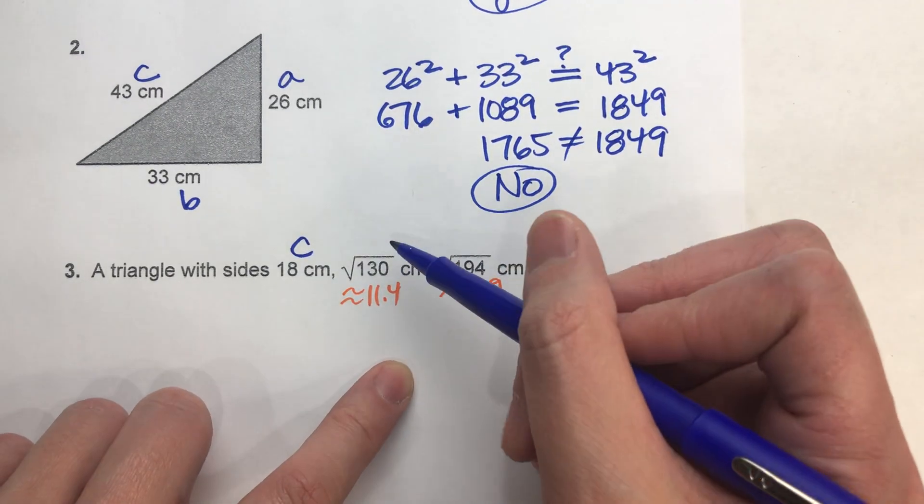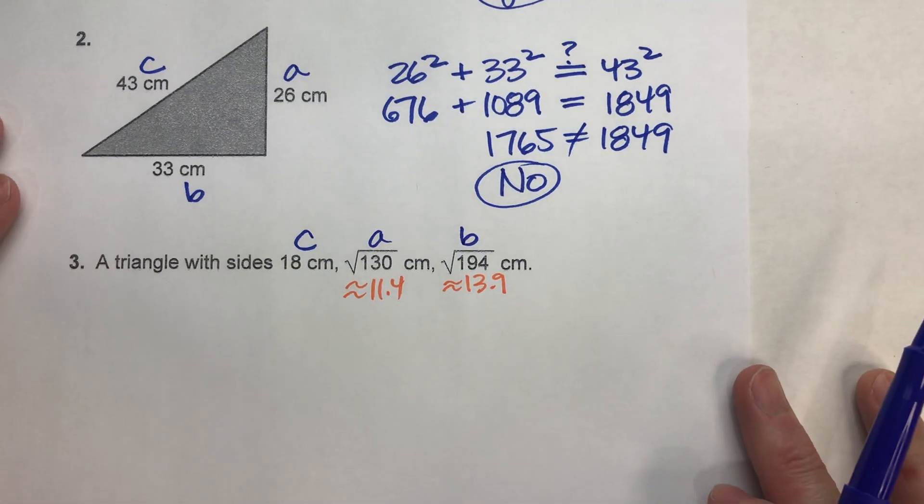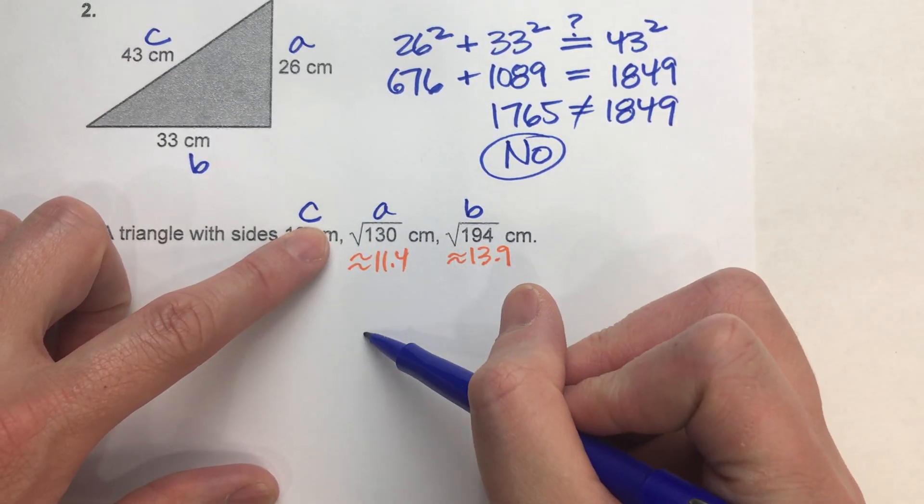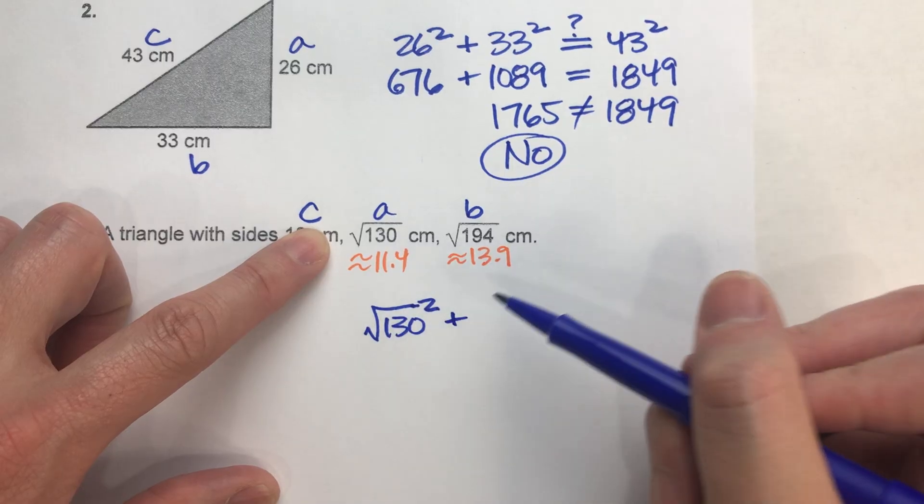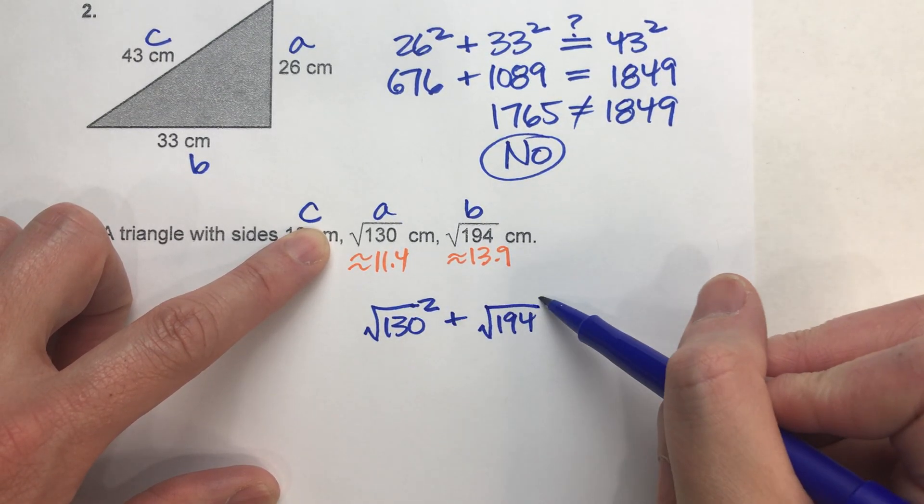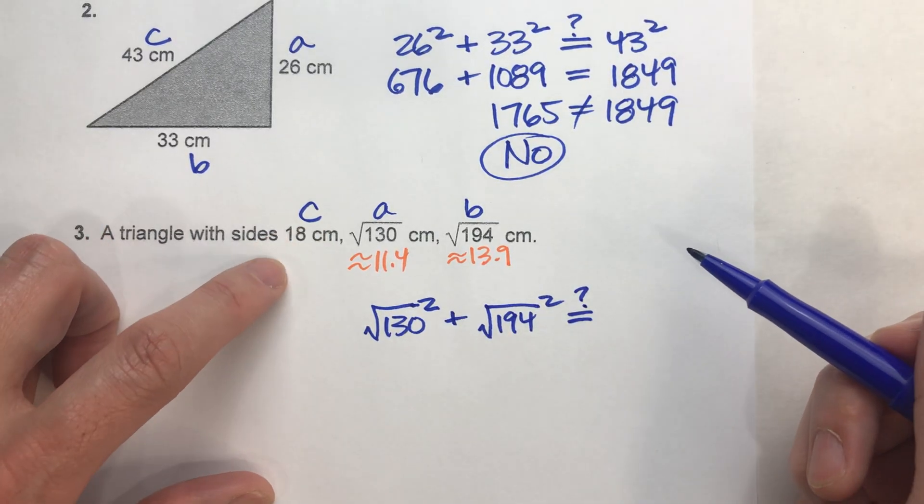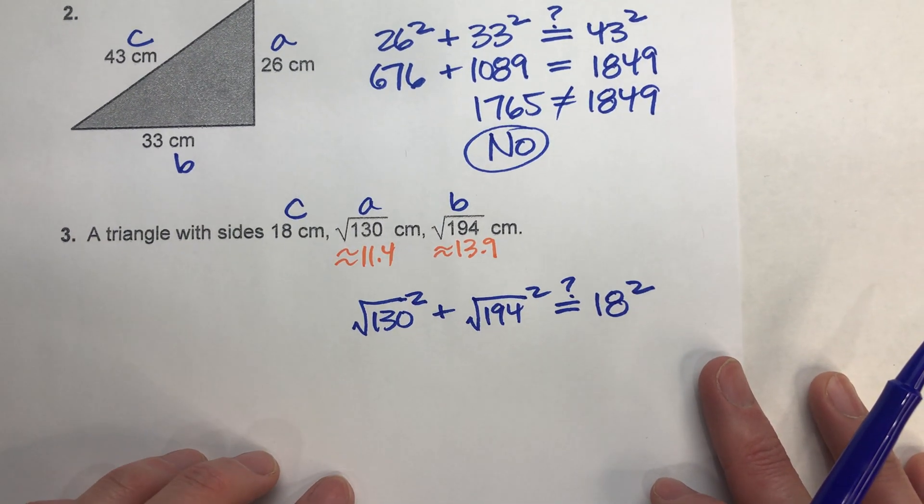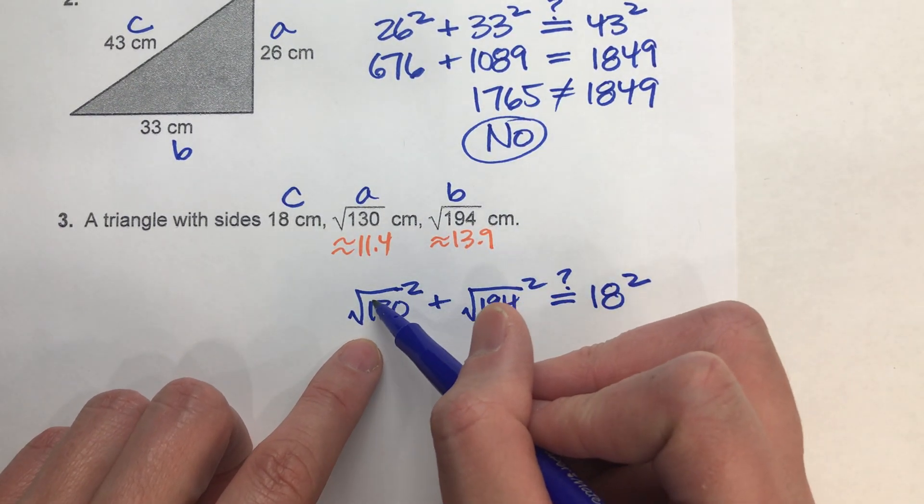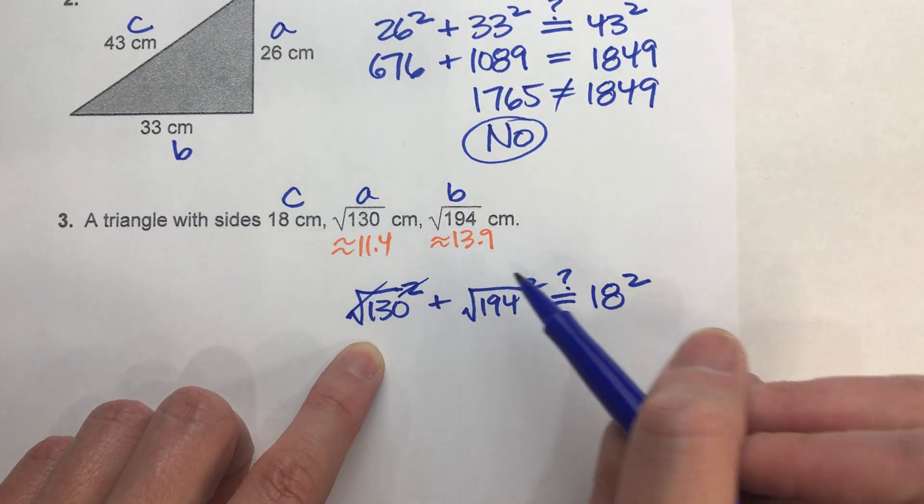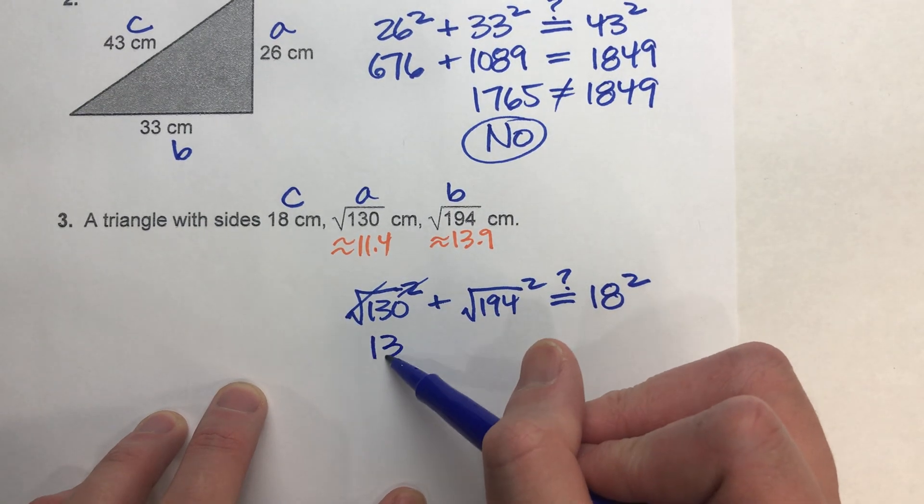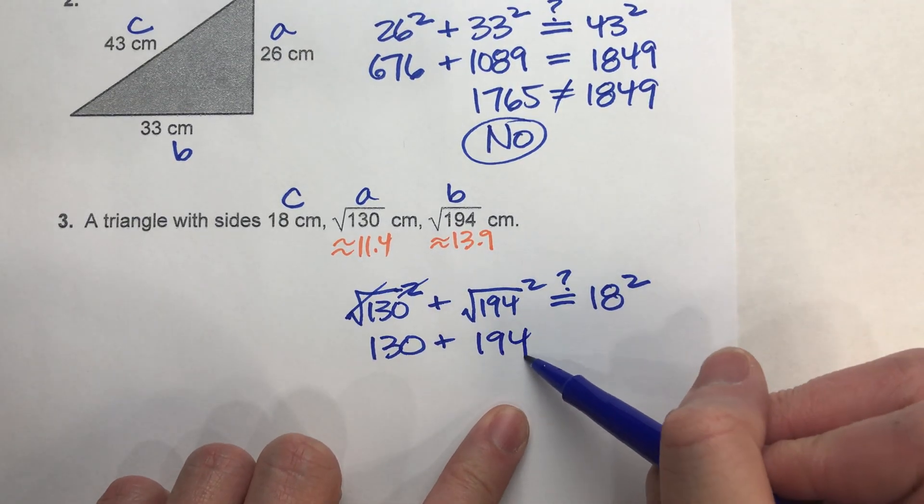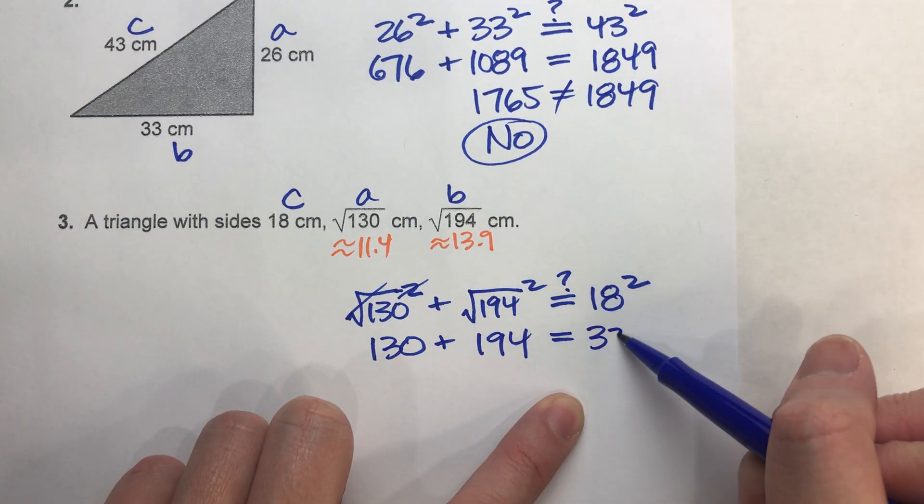Now we can set it up using the Pythagorean theorem and see if it's the right triangle. A squared, A is the square root of 130, so the square root of 130 squared. Plus B squared, B is the square root of 194, so that's squared. We want to know, does it equal C squared, which is 18 squared. It's a little tricky with the square roots, but actually it's easier if you really think about it. Because what happens when you square a square root? Squaring a square root undoes each other. The square root of 130 squared is just 130. Plus, the square root of 194 squared is just 194. And does that equal 18 squared? 18 squared is 324.